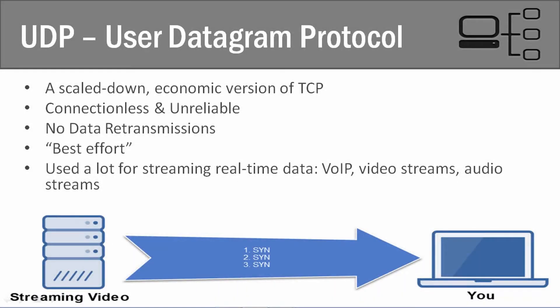In this video, we're going to talk about the User Datagram Protocol, better known as UDP. Remember, we talked about TCP in the previous video, and we said that it's connection-oriented, it's very reliable, and it has re-transmissions of data when data isn't received. UDP does not do any of that. UDP is a scaled-down, economic version of TCP, because when you add all this extra functionality onto a protocol like TCP, it requires a lot of resources.